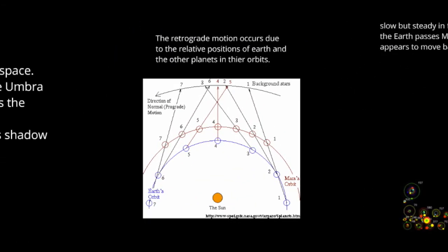Retrograde motion happens as we are passing another planet in its orbit. For instance, if we are watching Mars, and we're at position one, we see it at a certain location with respect to the background. At position two, another different location. As we pass it, notice that the alignment between the two planets in the background stars changes. There is a point from position three through position five where it appears that Mars is traveling backwards in the sky. And that is retrograde motion.